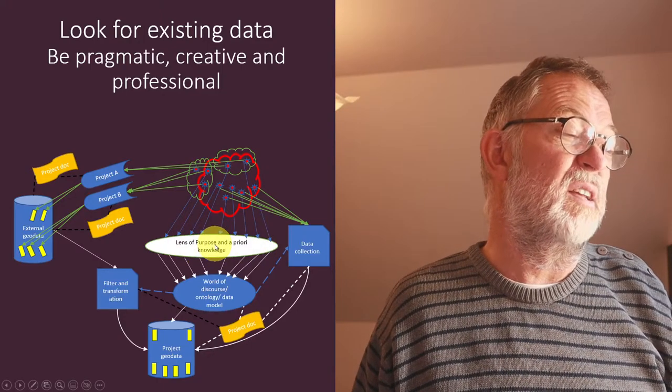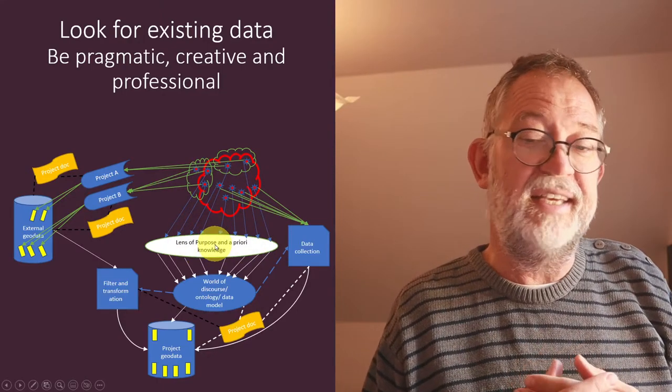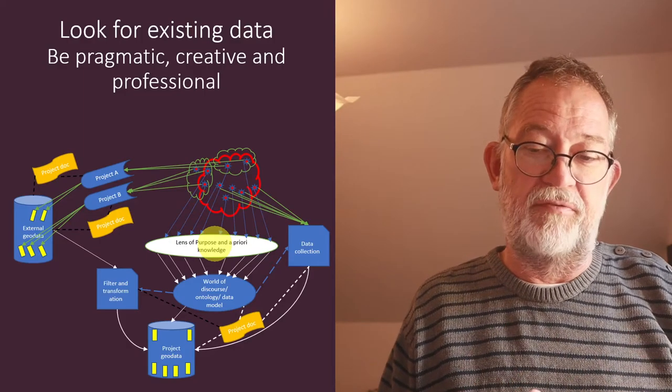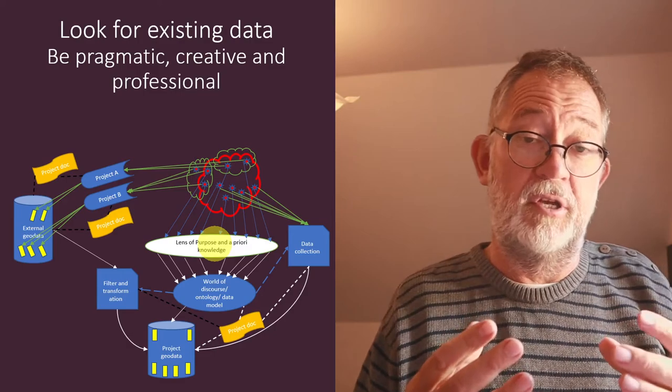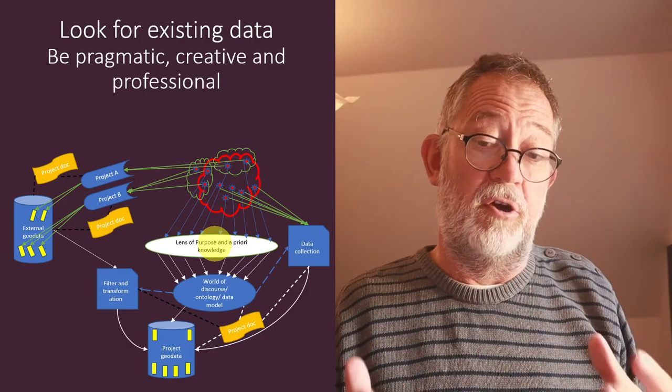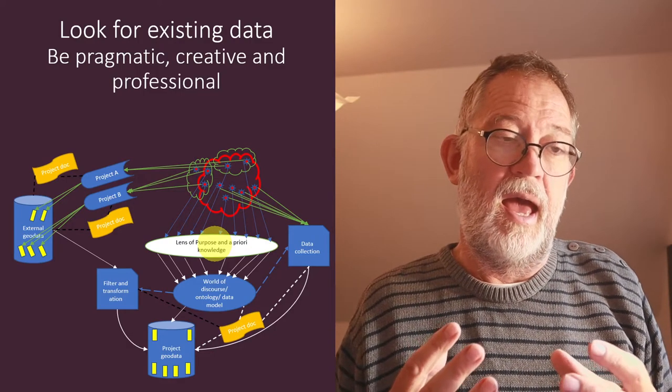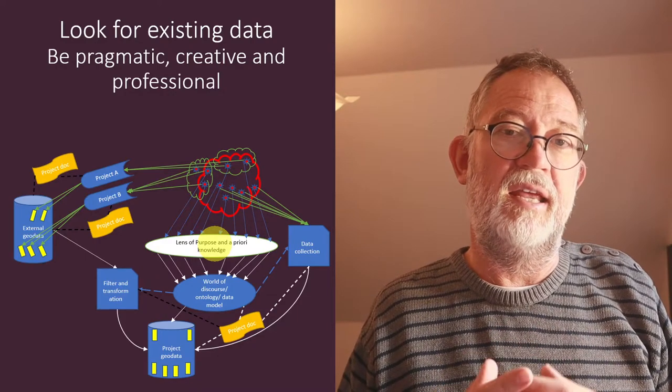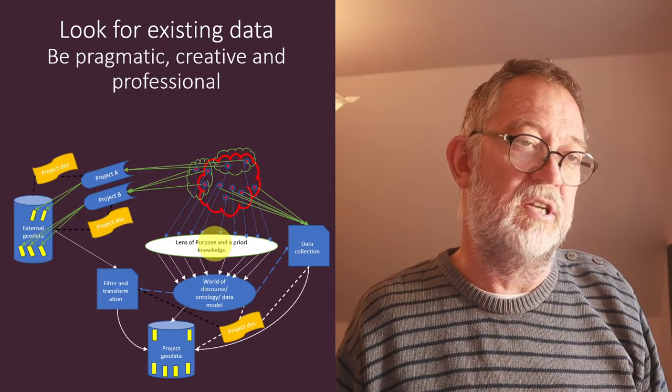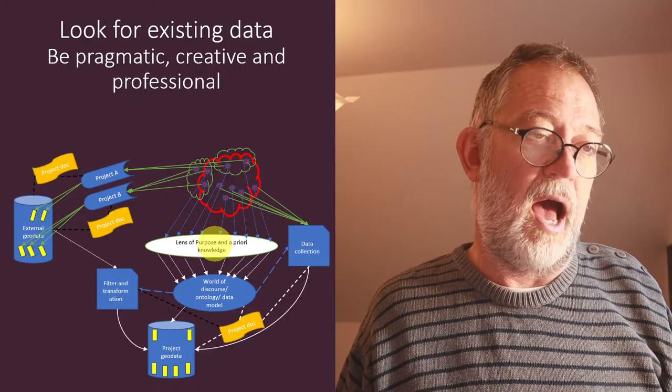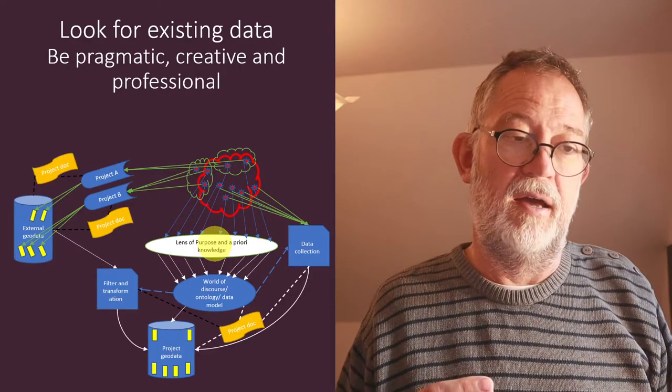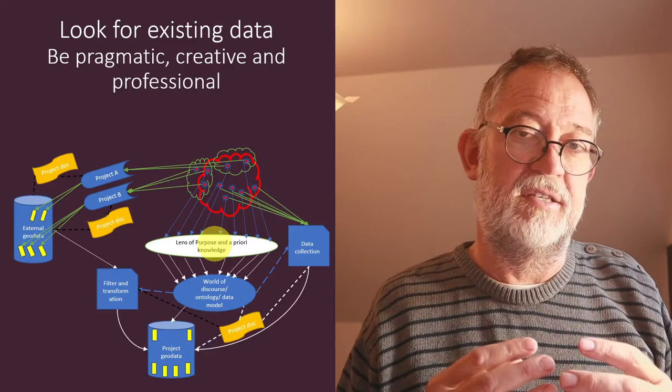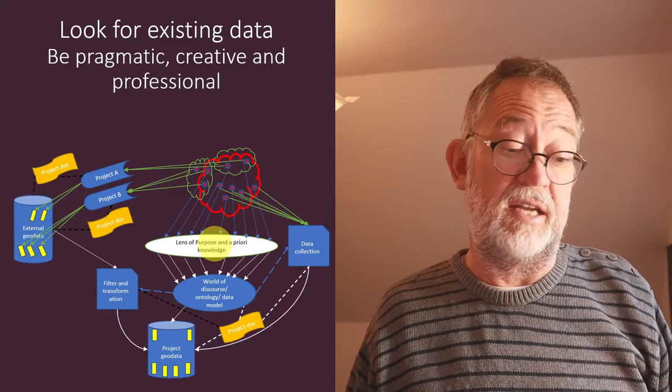You see your world of observation through your purpose and your a priori knowledge, and that leaves quite a lot of space to consider: how can I then modify this lens so that it better fits to existing data?